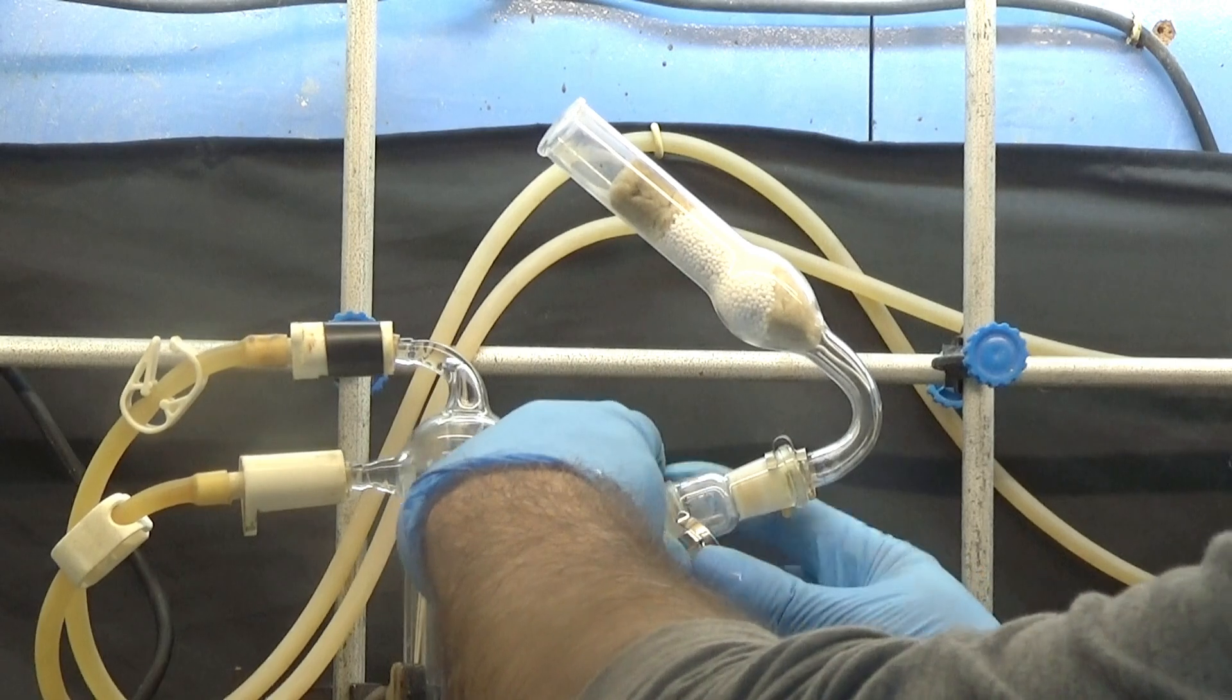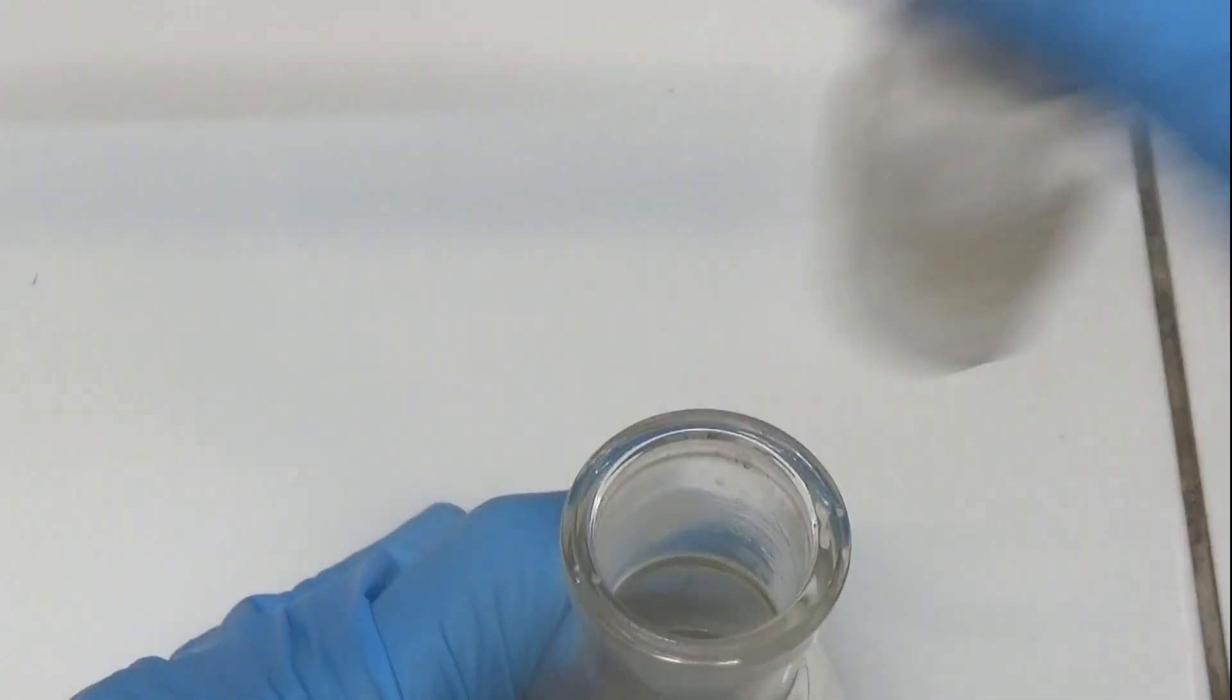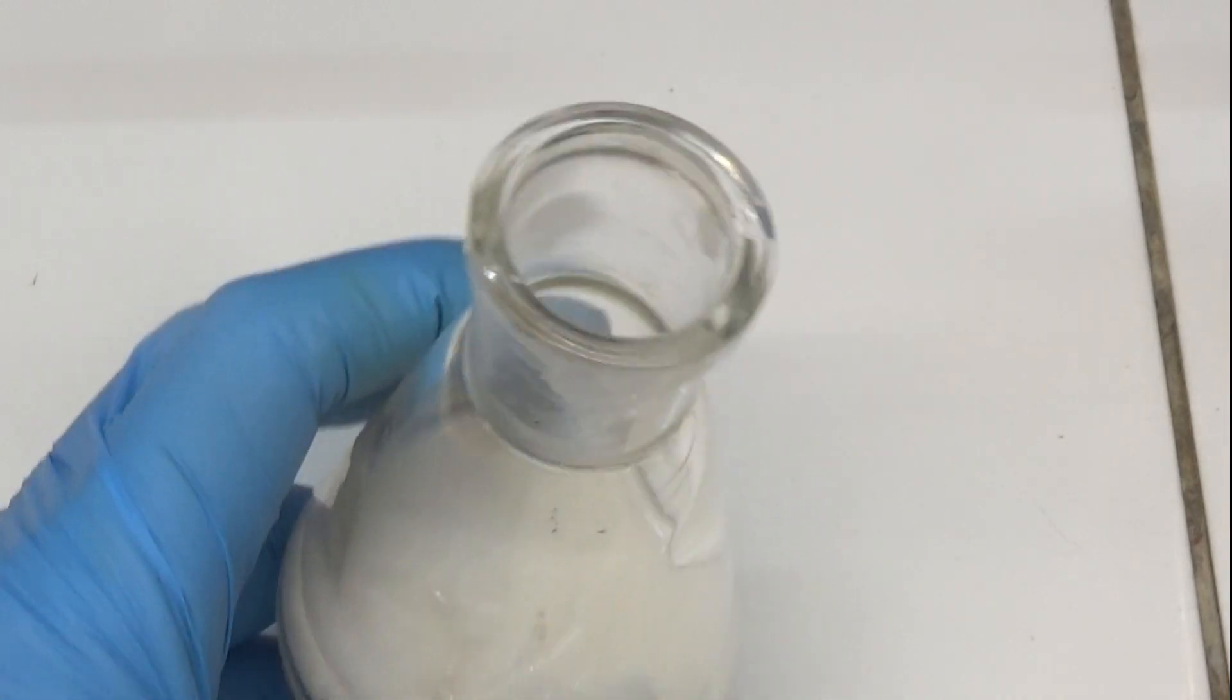Calcium chloride tubes can be used to protect the reflux condenser from moisture. We let it cool for an hour and observed a white solid that has crystallized.